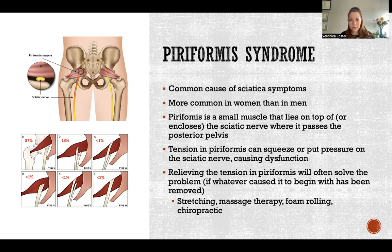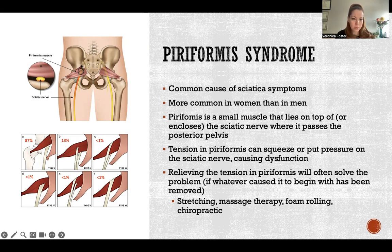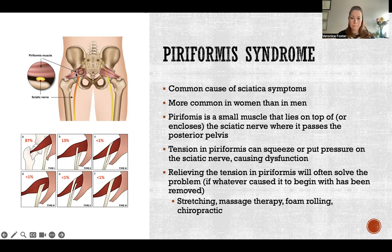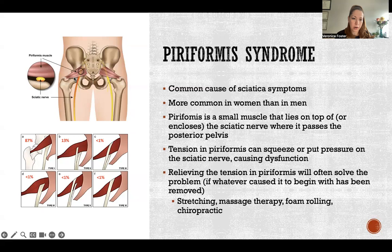Piriformis is the name of that muscle — this little muscle right here. We're looking at the posterior pelvis. It's a small muscle that goes from the front of the sacrum, crosses to the back of the pelvis, and then attaches to the femur.